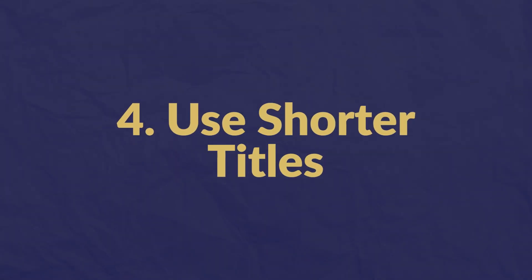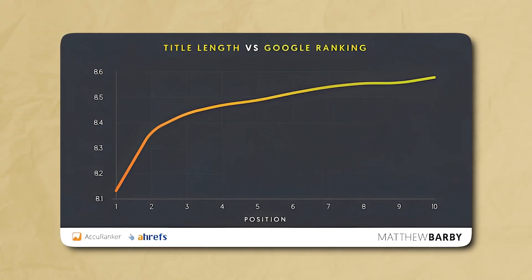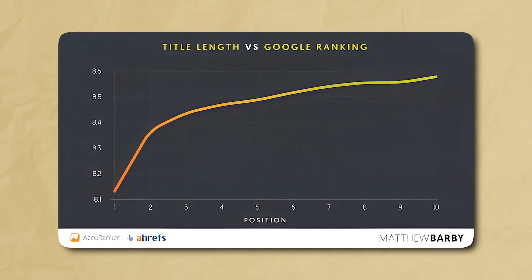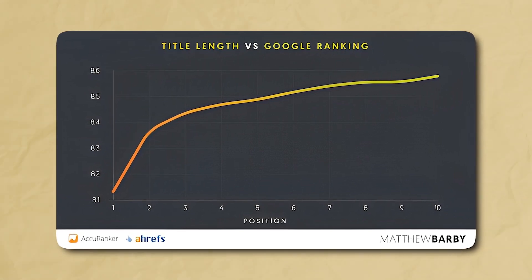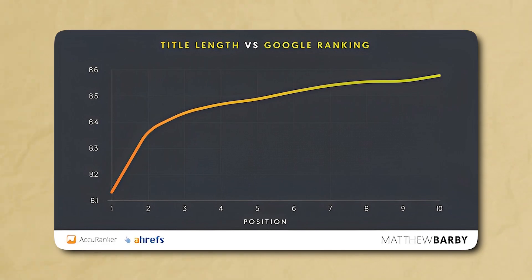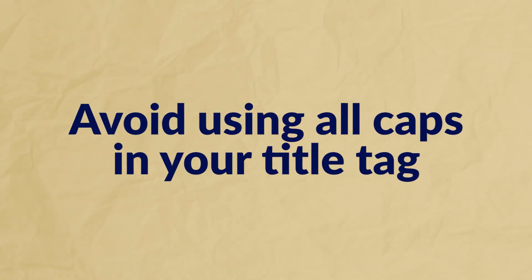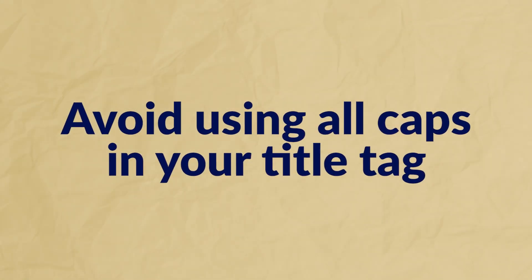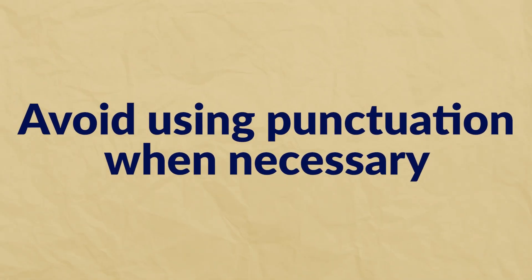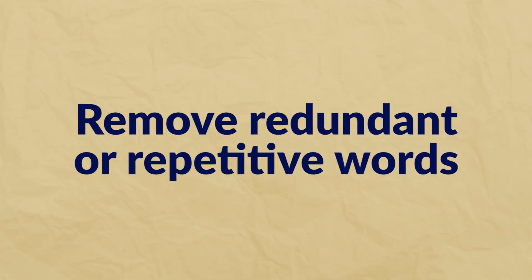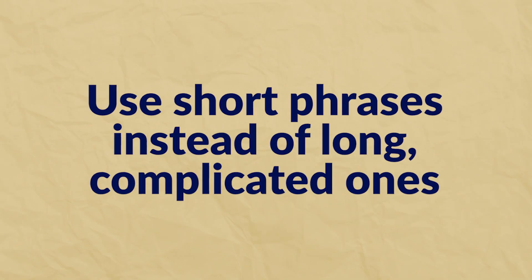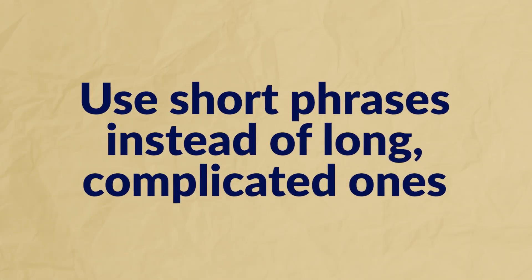Number four: use shorter titles. Research found that shorter titles tend to perform better in Google. Try to stay below 60 characters, including spaces. If you're struggling to keep it under 60 characters, try the following: avoid using all caps, since capital letters take up more space; avoid unnecessary punctuation; remove redundant or repetitive words; and use short phrases instead of long complicated ones.